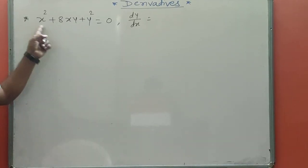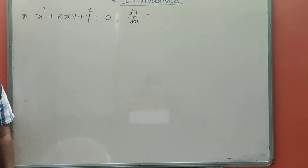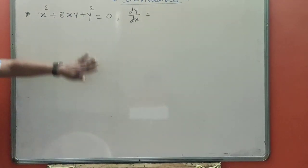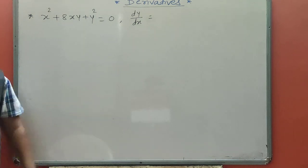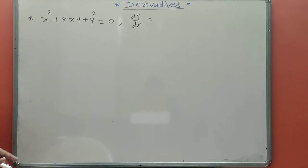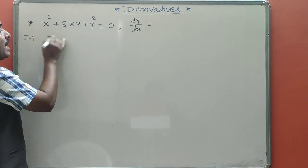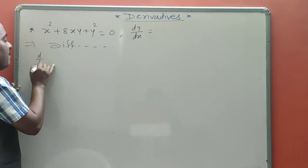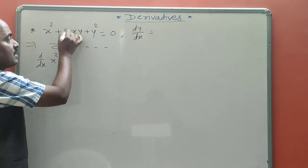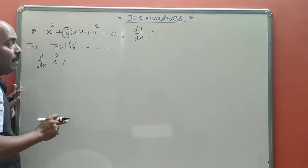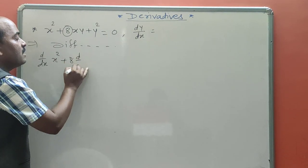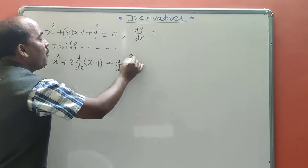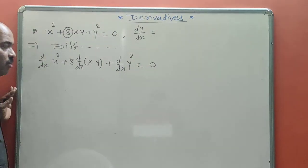Next example: x² + 8xy + y² = 0. Find dy/dx. This is a quadratic equation and y is directly available, so this is also an implicit function. Here, no simplification is needed — directly differentiate with respect to x. Find the derivative of x², then the term 8xy where a constant and variable are multiplied, then y², then derivative of 0 equals 0.